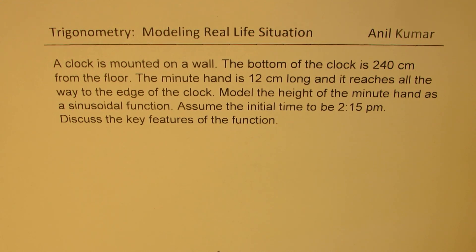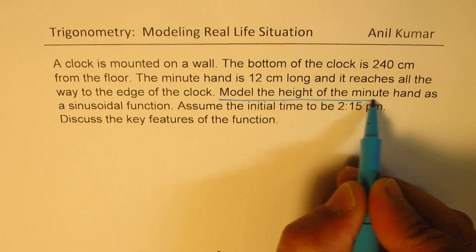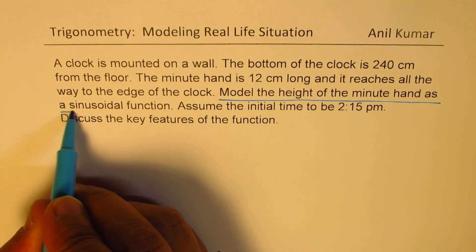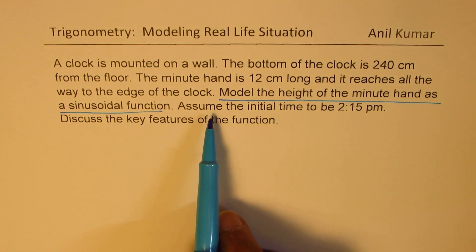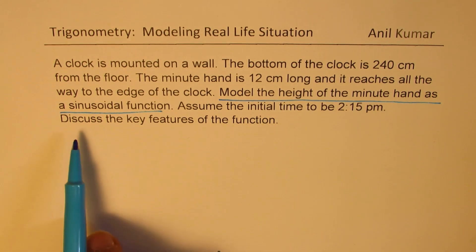The question here is: a clock is mounted on a wall. The bottom of the clock is 240 centimeters from the floor. The minute hand is 12 centimeters long, and it reaches all the way to the edge of the clock. Model the height of the minute hand as a sinusoidal function. So we need to model the height of this minute hand as a sinusoidal function. Assume the initial time to be 2:15 p.m. Discuss key features of the function.